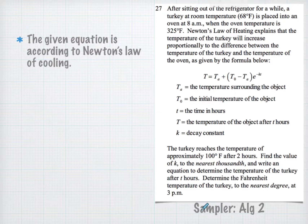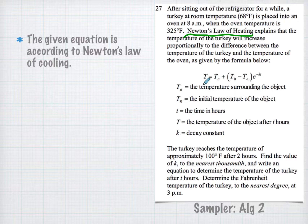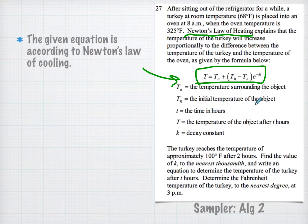The first question is from the Algebra 2 sampler. After sitting out of the refrigerator, a turkey at room temperature of 68 degrees Fahrenheit is placed in the oven at 8 a.m. The question mentions Newton's law of heating and gives the formula correctly, then asks you to calculate the rest. This was a good way to connect math and physics — in fact, in some parts of the world, physics is part of the applied mathematics department, not science.